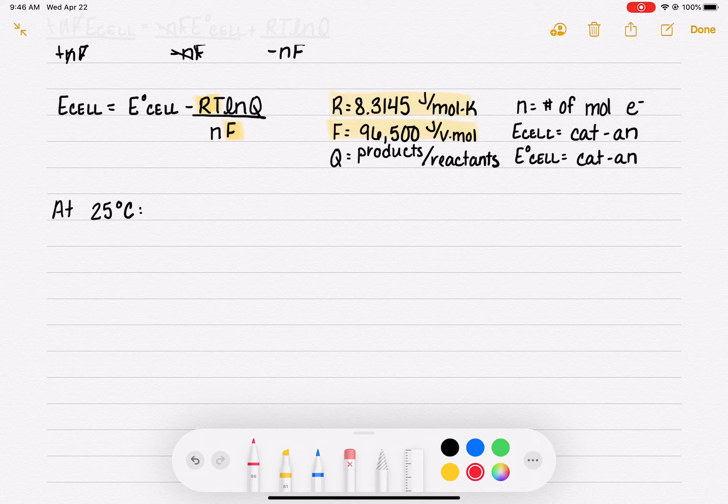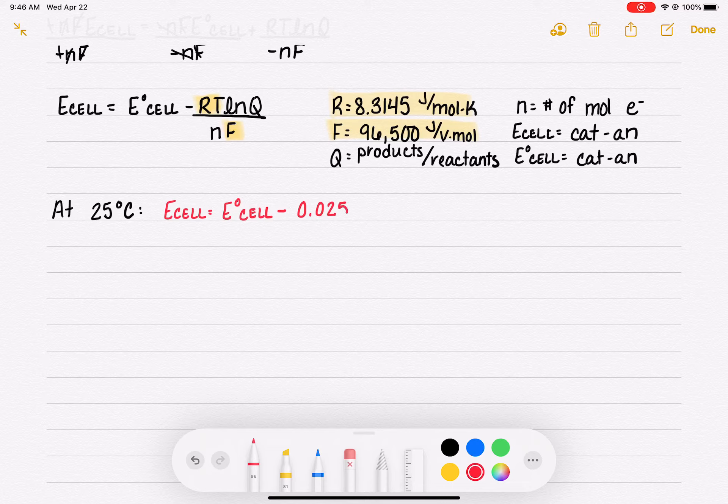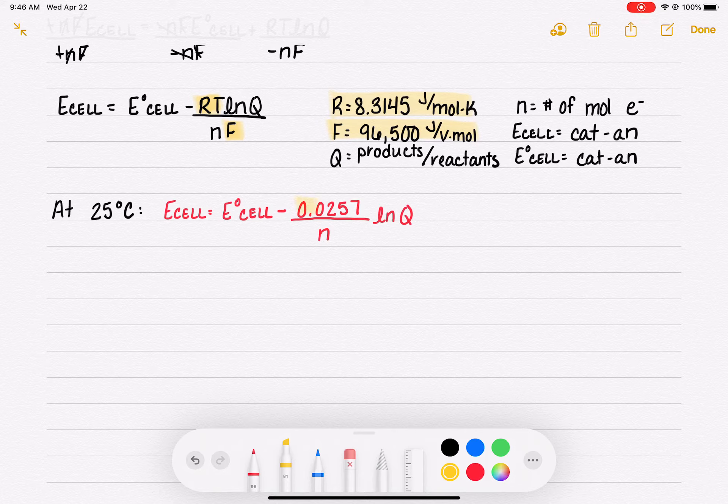That is going to give us Ecell non-standard equals E°cell minus, and this number is going to look familiar to you, 0.0257 over n times the natural log of Q. Again, the 0.0257 is coming from doing the math, R times T divided by F when our temperature is 25°C.